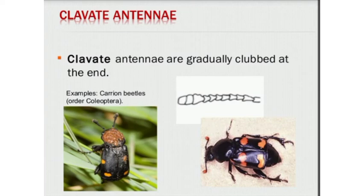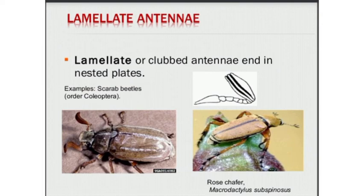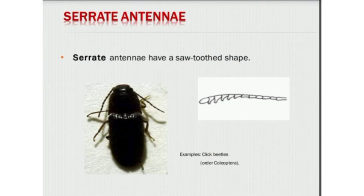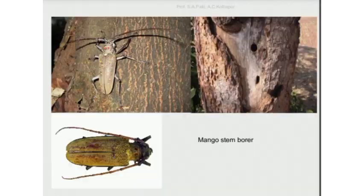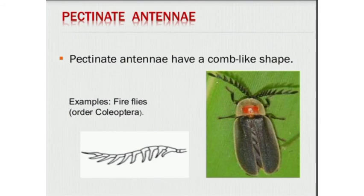Next is lamellate antennae, which are clubbed antennae ending in nested blades. Examples are scarab beetles, from Coleoptera. Next is serrate antennae, which have a saw-tooth shape. Examples are click beetles, from Coleoptera. Next is pectinate antennae, which have a comb-like shape. Examples are fireflies, from Coleoptera.